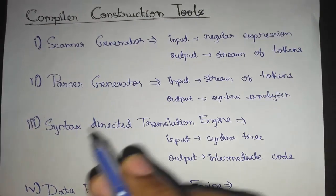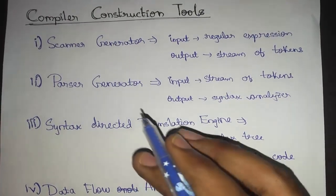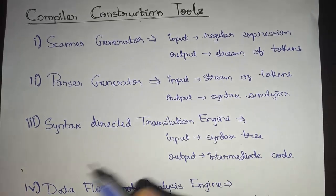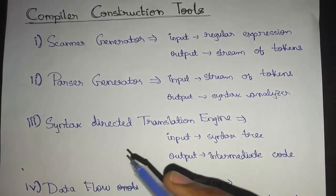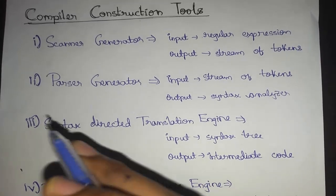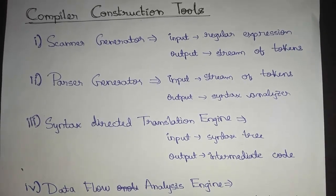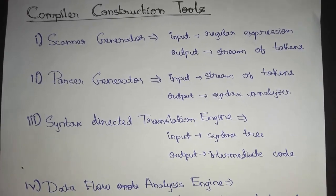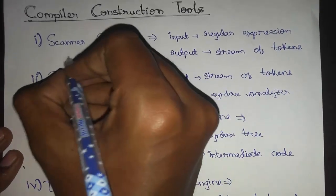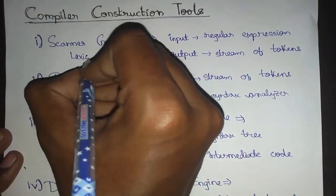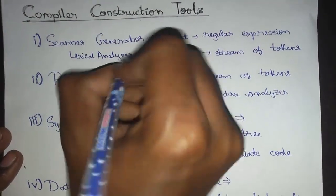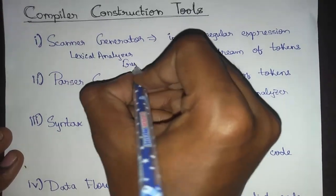A scanner generator accepts regular expressions as input and produces a lexical analyzer as output. A lexical analyzer is a phase of a compiler which reads the source program character by character and produces a stream of tokens. This can also be called a lexical analyzer generator.